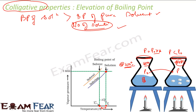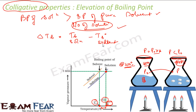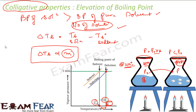Now if delta T_b is the elevation in boiling point, then delta T_b = boiling point of solution minus boiling point of pure solvent. It is this way round because the solution's boiling point is bigger. Experimentally it is seen that delta T_b is directly proportional to m, that is molal concentration. Please note it is a very critical formula — m here is molality, not molarity.